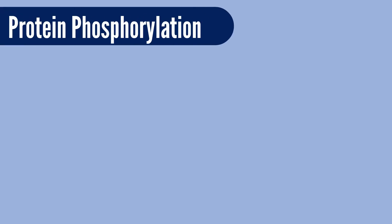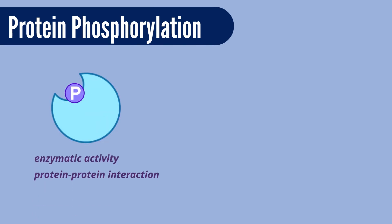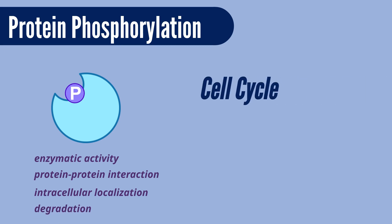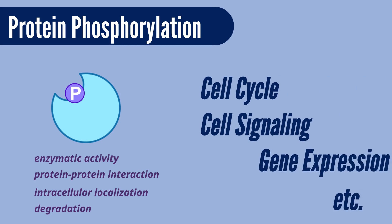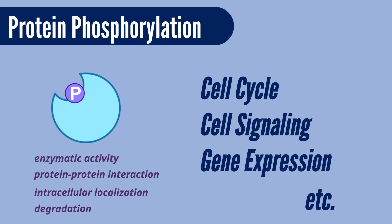Protein phosphorylation is one of the most important post-translational modifications, which regulate the activity and behavior of cellular proteins and various cellular events such as cell cycle, cell signaling, and gene expression.